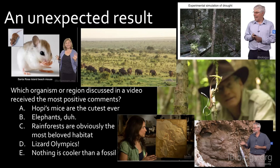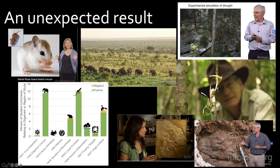Poll results show a tie between elephants and the lizard Olympics. The actual results show both were much more liked than the others, but lizards did eke out the elephants by just a little bit. The fossils were still well-liked, and Hopi's mice were extra cute. The Amazon rainforest received comments about students enjoying seeing such an iconic habitat. There were a couple of negative comments about not enjoying seeing certain organisms, which could have been very different if we'd chosen videos featuring organisms students might have phobias about.